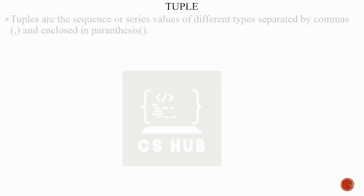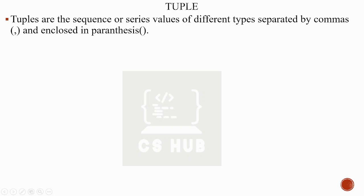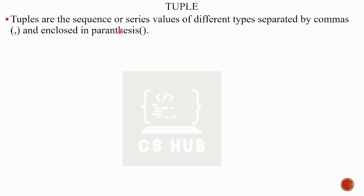What is a tuple? A tuple is a sequence or series of values of different types, separated by a comma and enclosed in parentheses. It is a heterogeneous data type, meaning it can hold different types of data — strings, integers, or anything else — separated by commas and enclosed in parentheses.